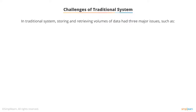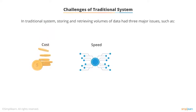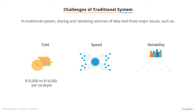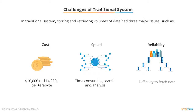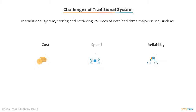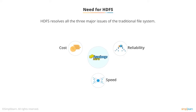Before 2011, storing and retrieving petabytes or zettabytes of data had three major challenges: Cost, Speed, and Reliability. Traditional file systems cost approximately $10,000 to $14,000 per terabyte. Searching and analyzing data was time-consuming and expensive. Also, if search components were saved on different servers, fetching data was difficult.